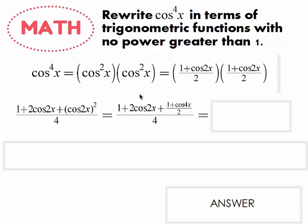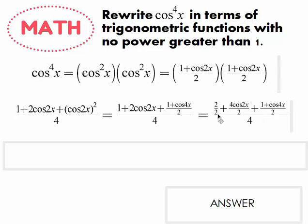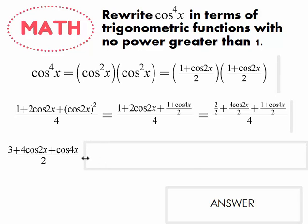We now have giant fractions on top of fractions, so we keep simplifying by making common denominators on the numerator to get one single fraction on top. Since the denominator is two, all terms get a denominator of two: one becomes two over two, two cosine 2x becomes four cosine 2x over two, and the last piece doesn't change. Combining like terms: the two and the one give us three; four cosine 2x stays as is; and cosine 4x stays as is — they cannot be combined because they don't have the same input.